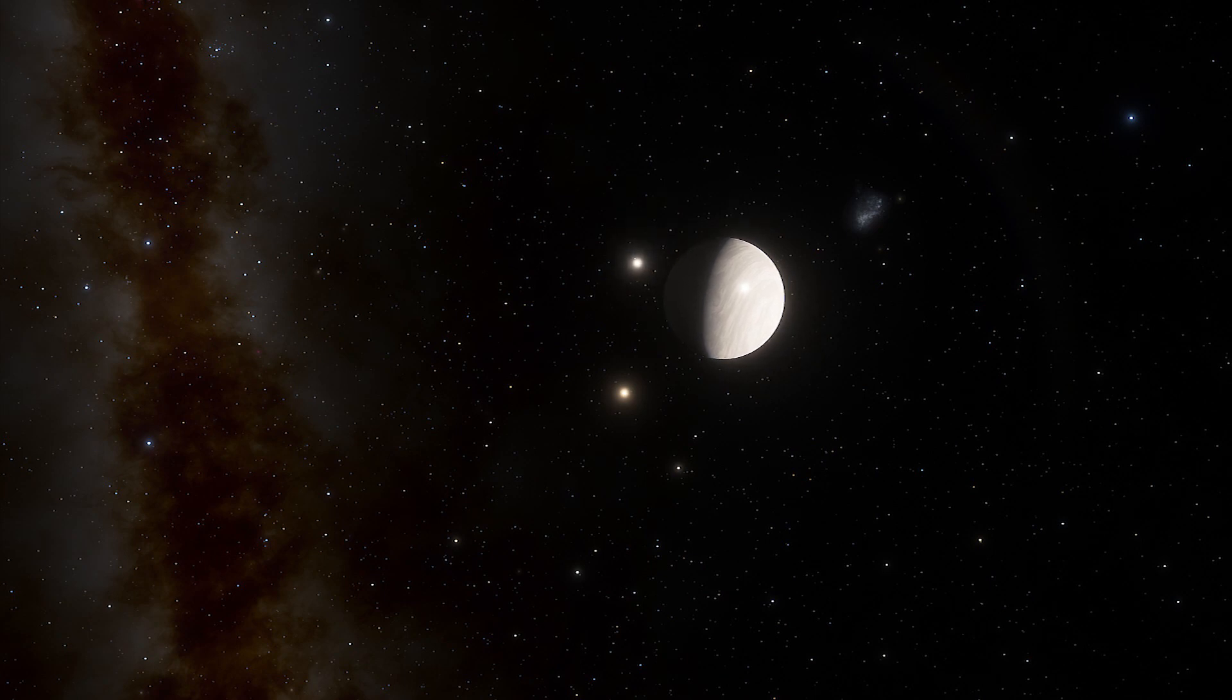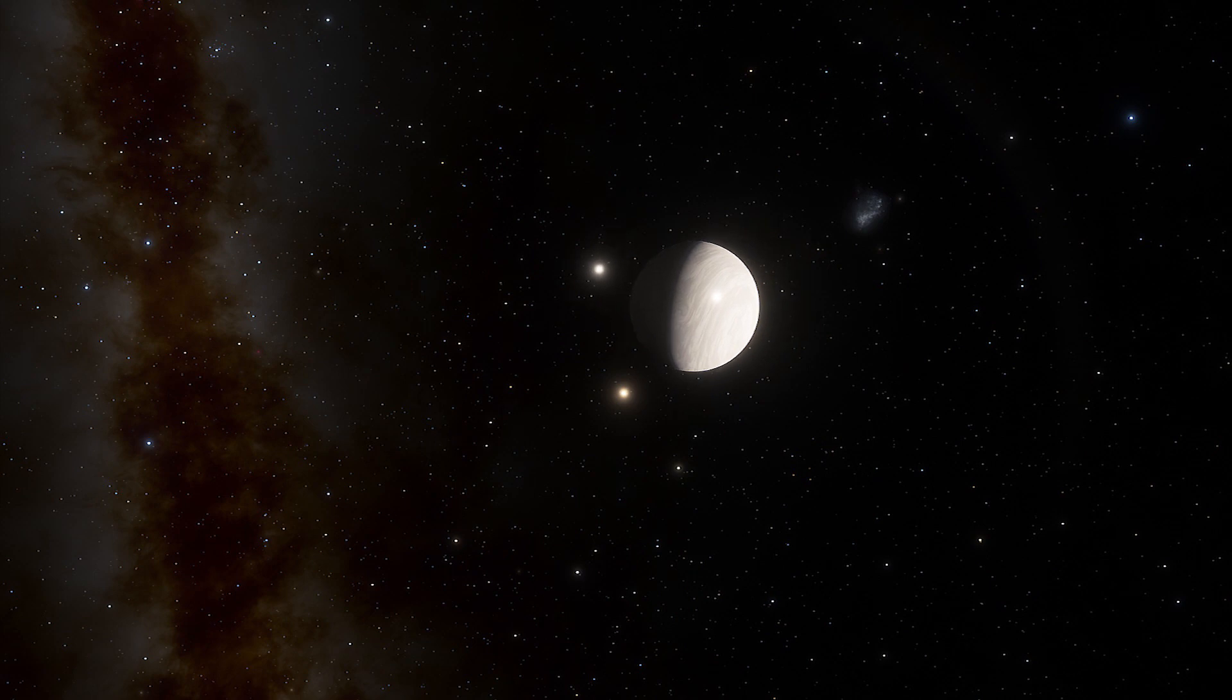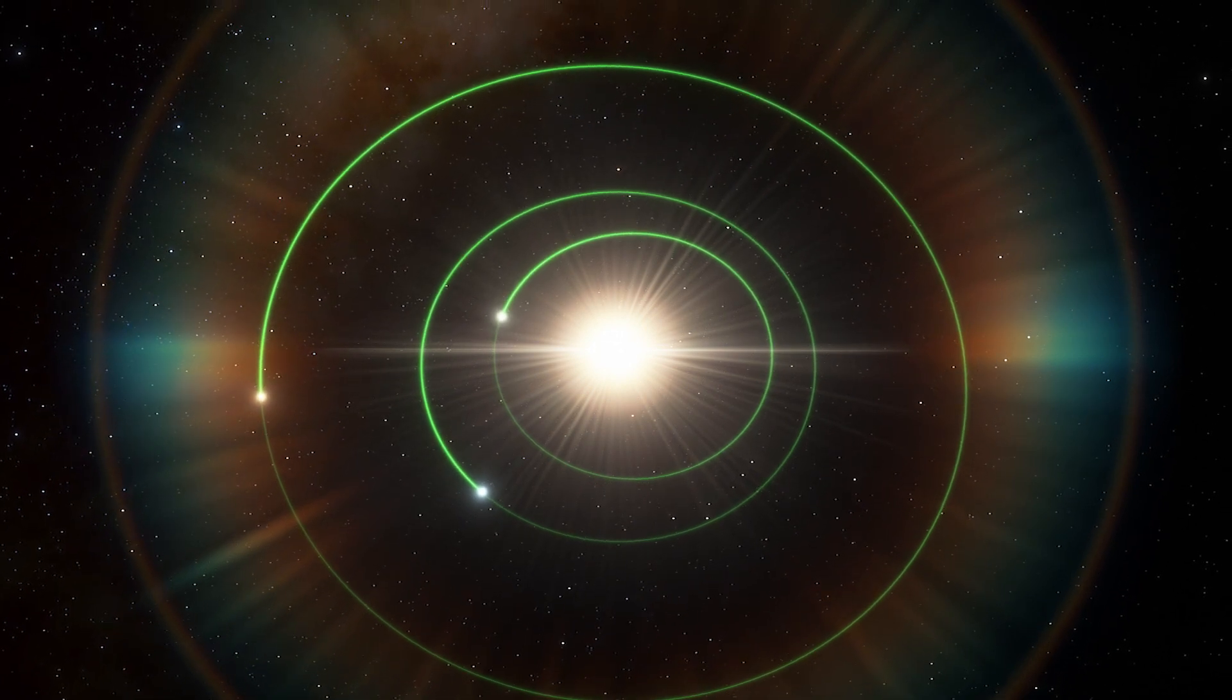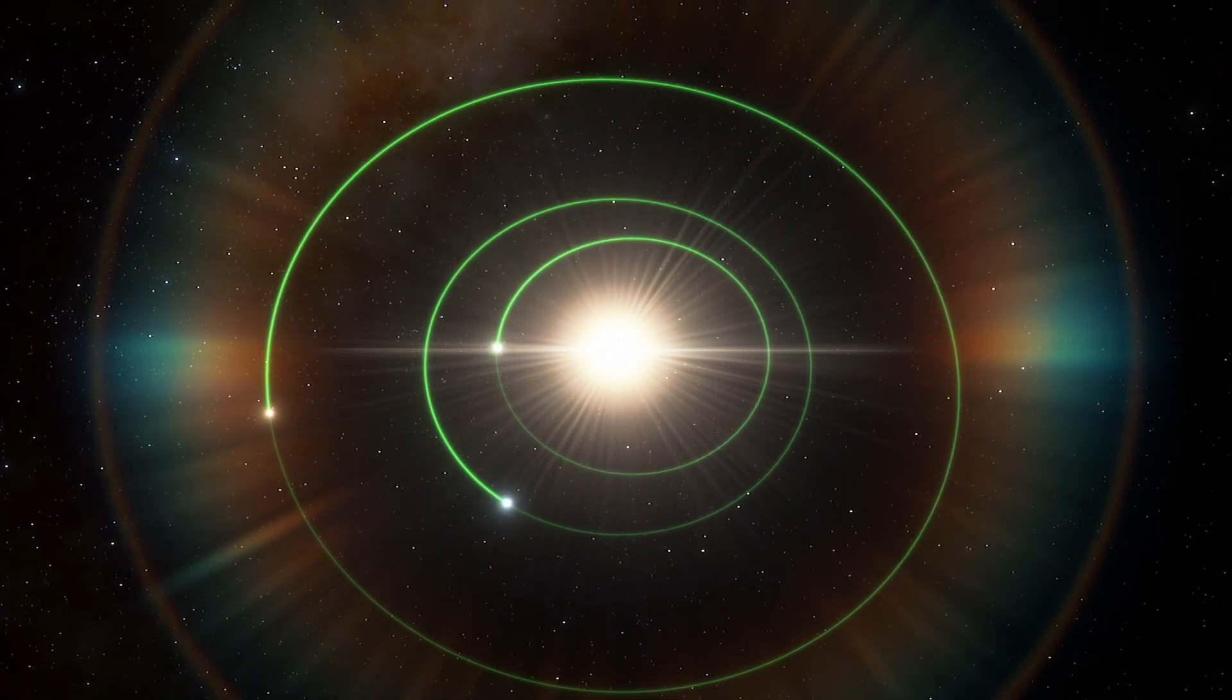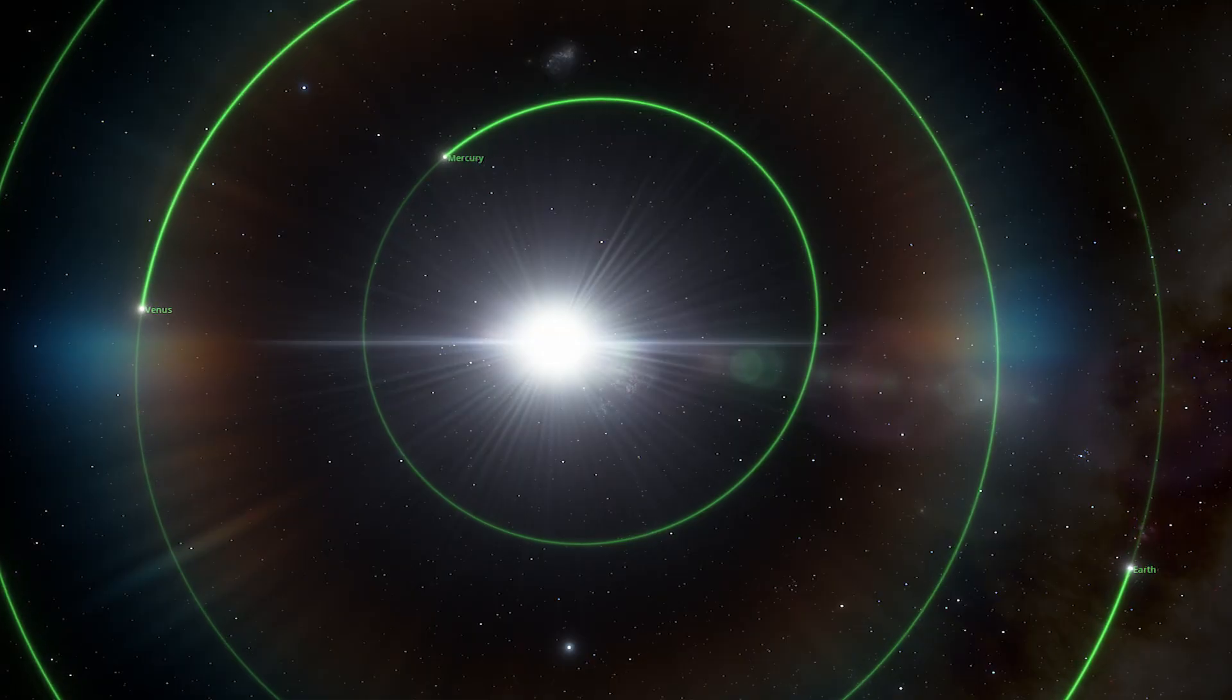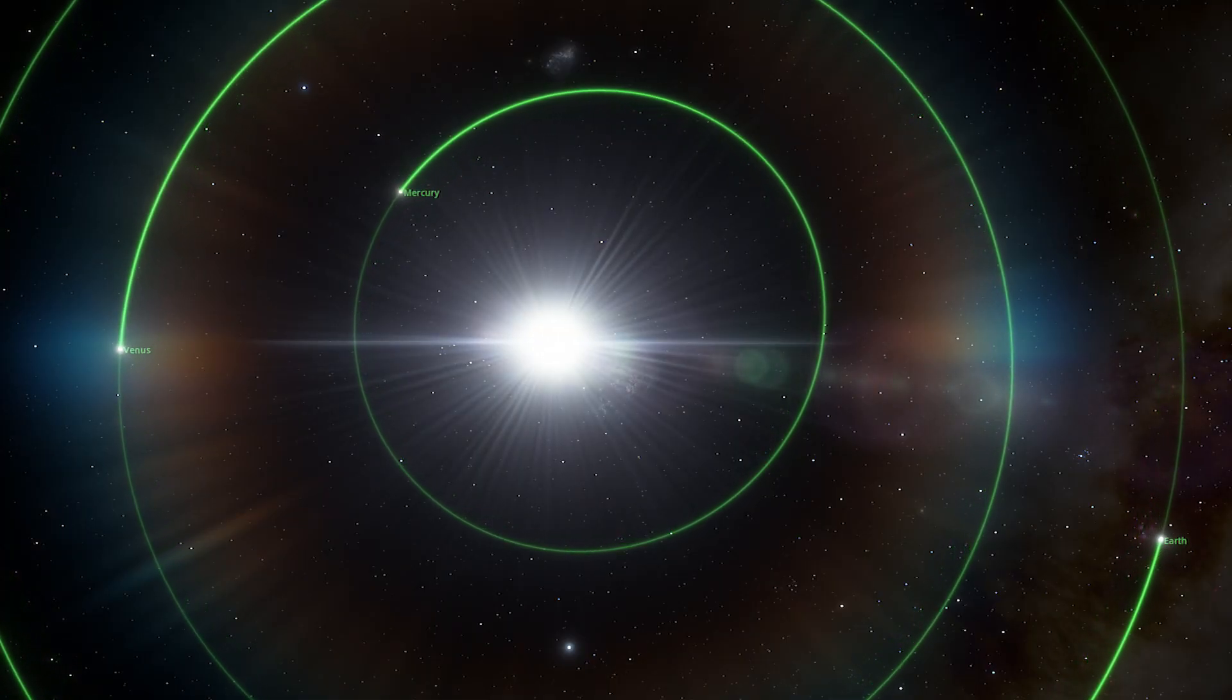Based on observations, the three planets appear to be at least 1.4 to 1.8 times the mass of Earth. All of them orbit around their star every 3 to 13 days, meaning the entire system would fit well within Mercury's 88-day orbit of the Sun.